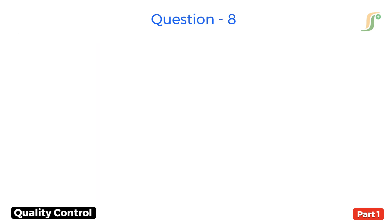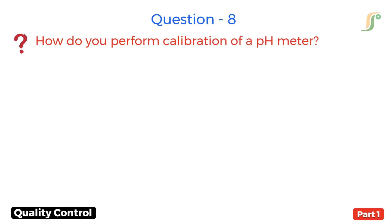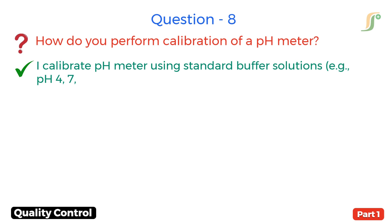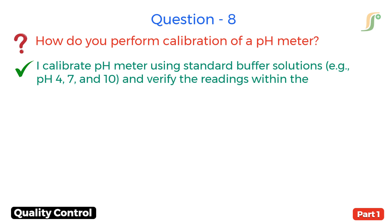Question 8. How do you perform calibration of a pH meter? Answer. I calibrate using standard buffer solutions, particularly pH 4, 7 and 10, and verify the readings within the acceptable range.